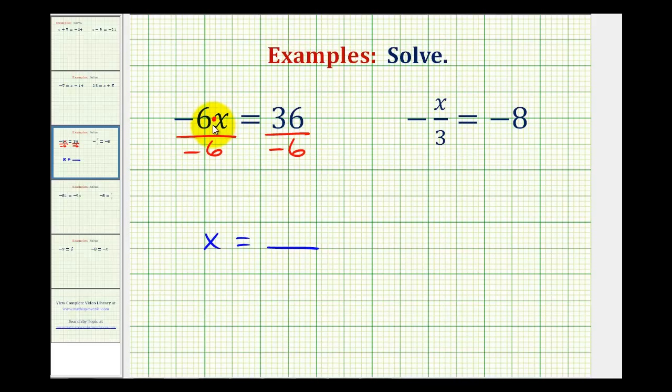So now we have negative 6 divided by negative 6, which simplifies to 1. And 1 times x would be x. And then on the right side, we have positive 36 divided by negative 6, which is equal to negative 6. So our solution is x equals negative 6.